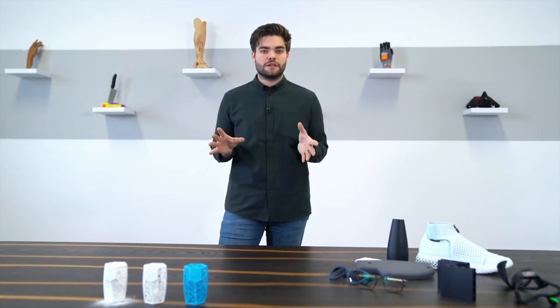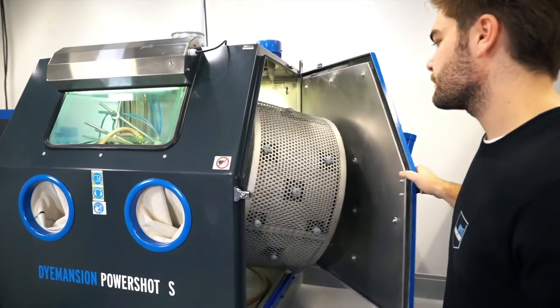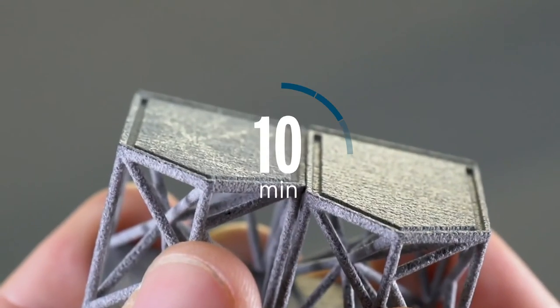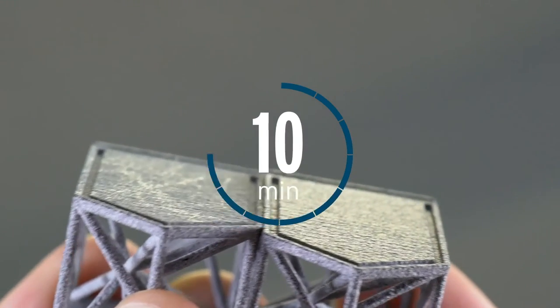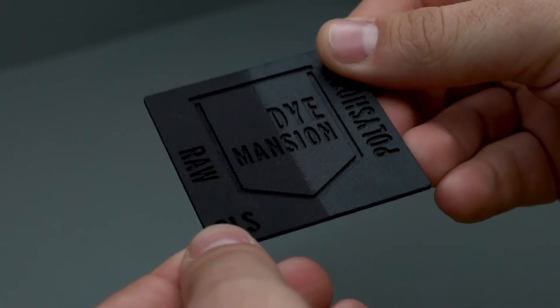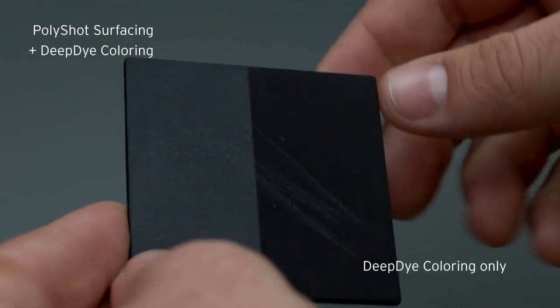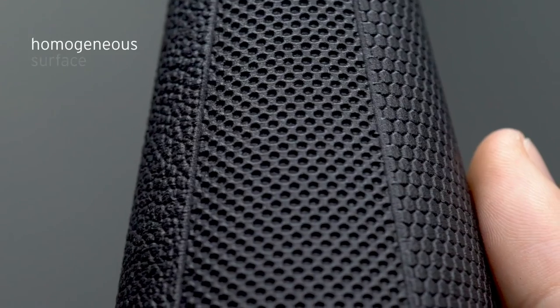This process gives a better look and feel to the part by setting a totally new quality standard. In the end, this process improves look, feel, and color quality. So PolyShot surfacing is key for reproducibility and end-use applications.